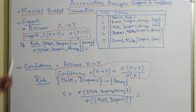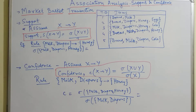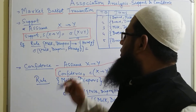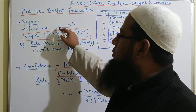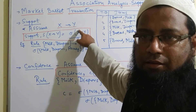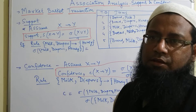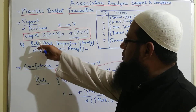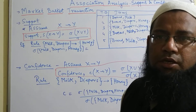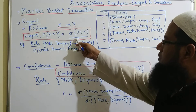Support: let us assume there is a rule which says that X implies Y. The meaning of X implies Y is that wherever there is an occurrence of X there is an occurrence of Y in the transaction. The support of X implies Y is equal to Sigma of X union Y — that means in all the transactions where you have X and Y together — divided by the total number of transactions.